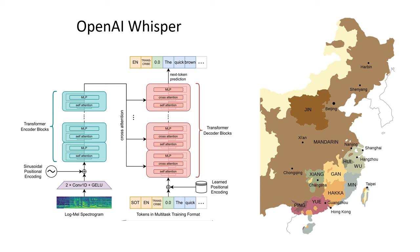But one language that Whisper cannot understand is my family's dialect of Chinese. Which dialect? The name of this dialect is called Diaoju or Cao Zhou Hua. Diaoju is part of the Minnan language family and is spoken in eastern Guangdong province.